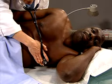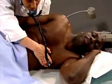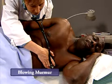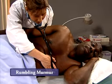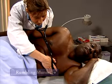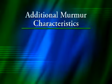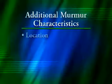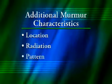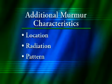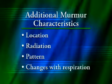In addition, describe the murmur's quality. For example, a murmur may be blowing, rumbling, or harsh. Also note the murmur's location, radiation, pattern such as crescendo, decrescendo, or plateau, and changes with the respiratory phase.